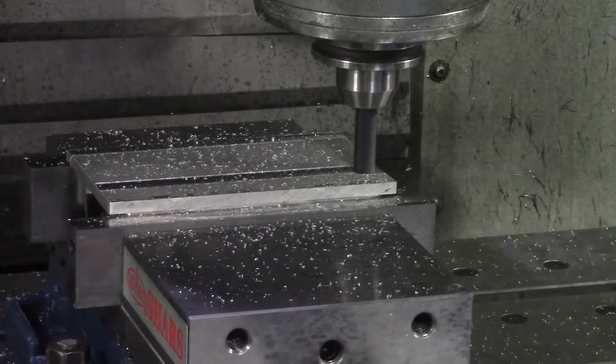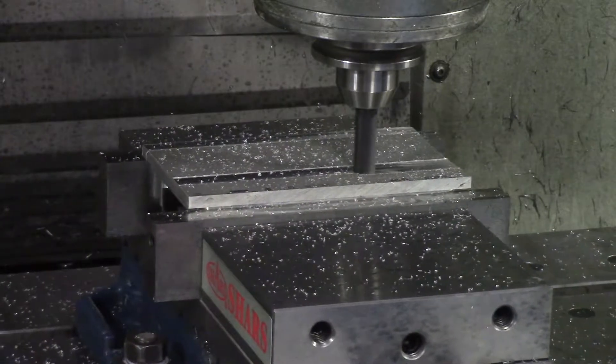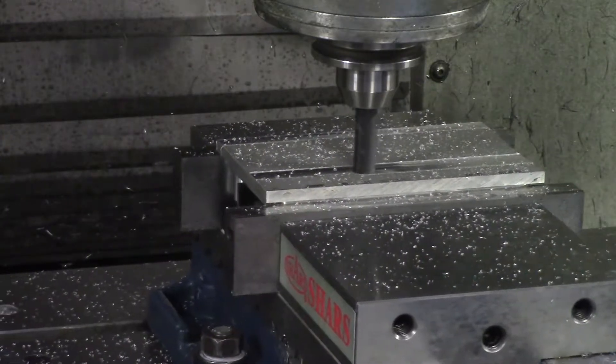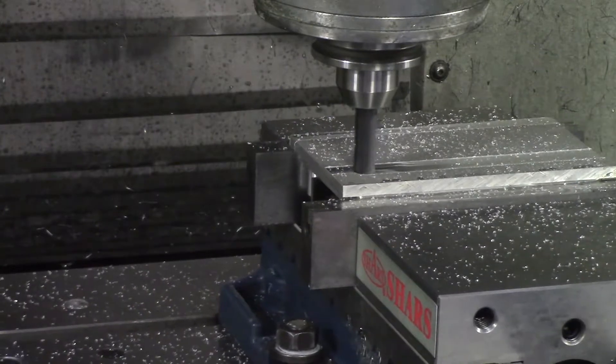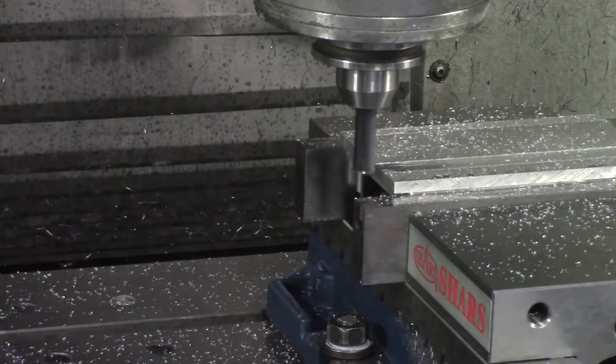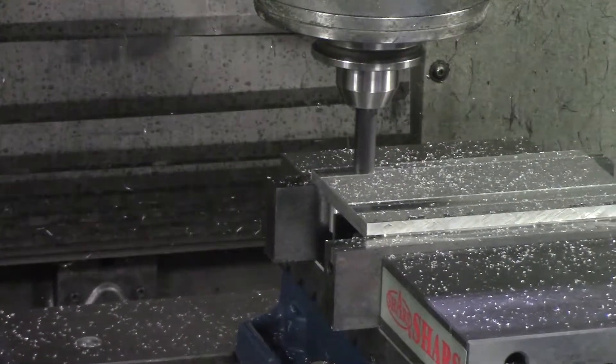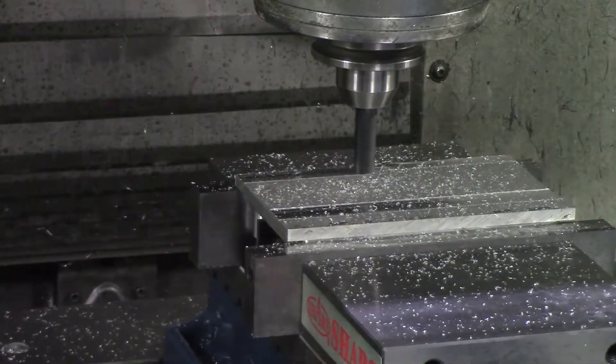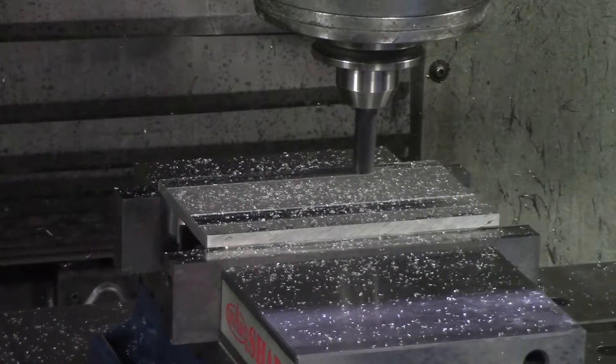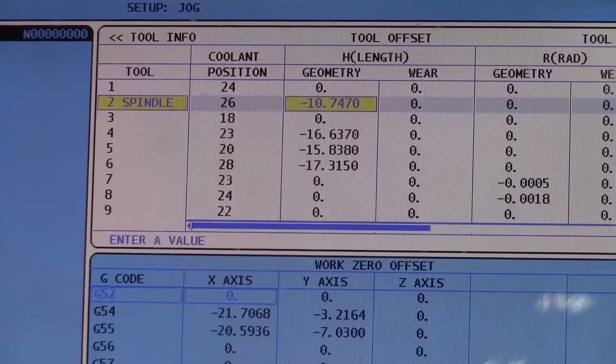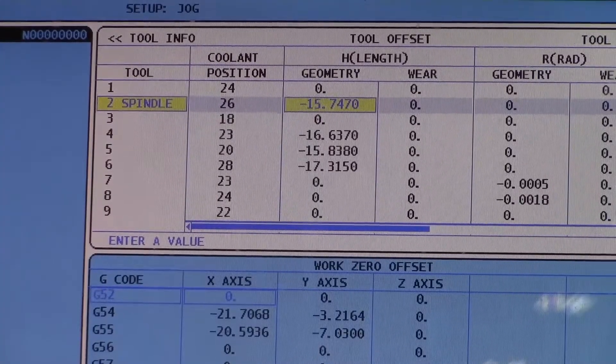You do not have to touch your tools off on the final Z depth, and I'll show you why in a second. We're just going to go around and skim two places so we can measure the part. Right after I did this, I'm going to touch that tool off, and then I'm going to zero out everything else.